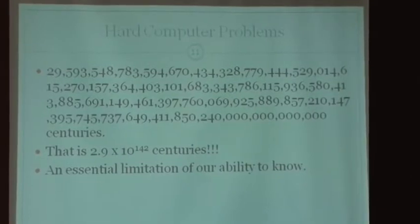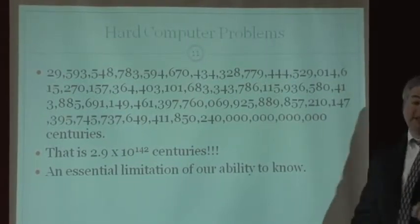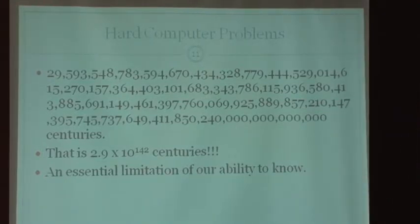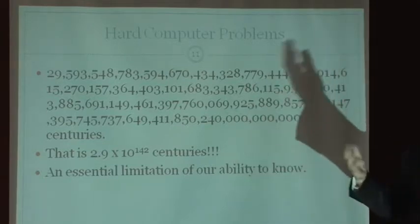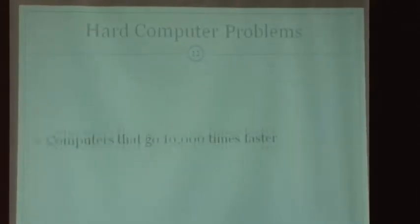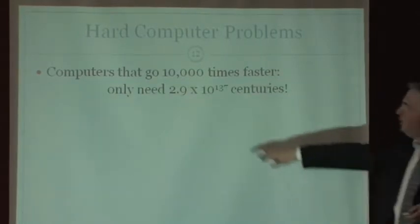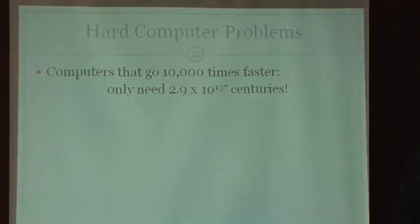Which brings to a correct answer, namely, what happens if I have a computer that's faster than this computer? Let's say it's 10,000 times faster, which computers over 100 years, they go 10,000 times faster. Computers that go 10,000 times faster, they only need 2.9 times 10 to the 137 centuries.